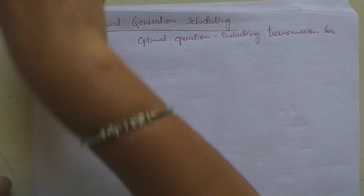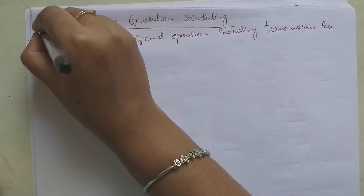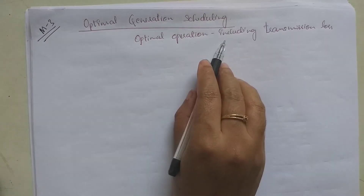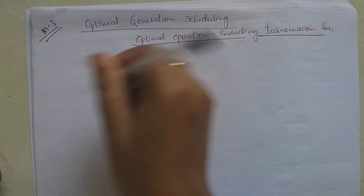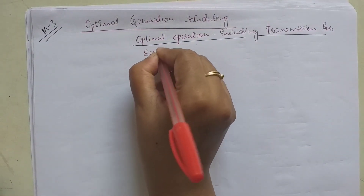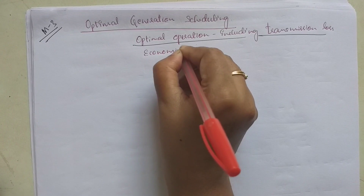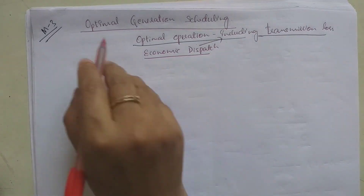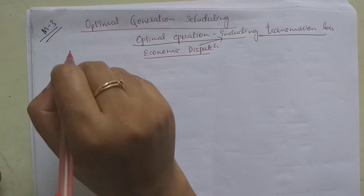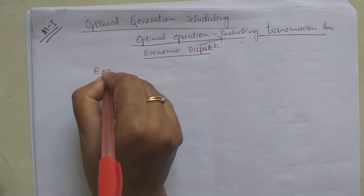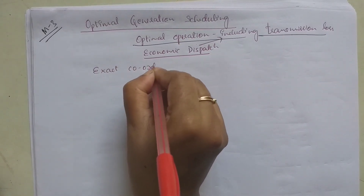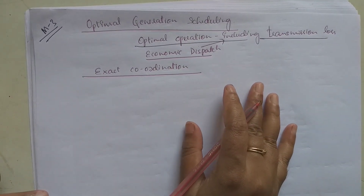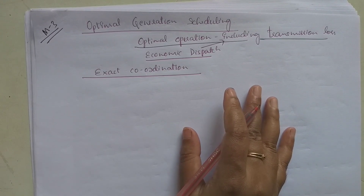Hello students, this is the next topic under module 3: the optimal generation scheduling. Optimal generation scheduling is also called optimal operation including transmission loss, or economic dispatch including transmission loss. The same derivation will be asked as: derive the exact coordination equation, as in the case of optimal operation neglecting transmission loss.